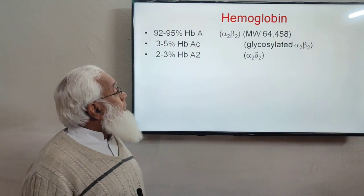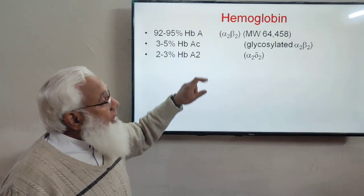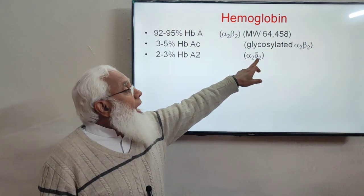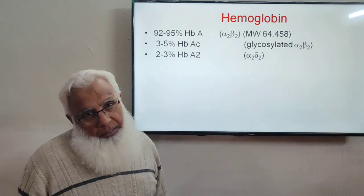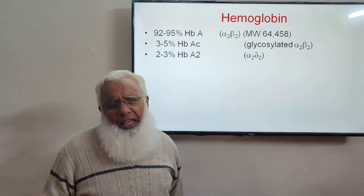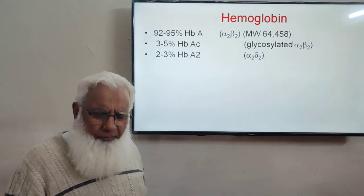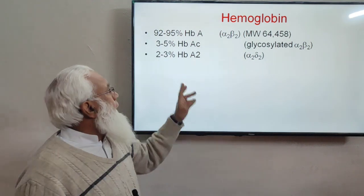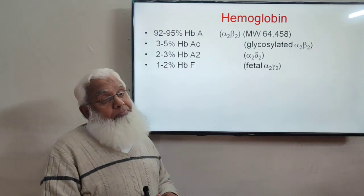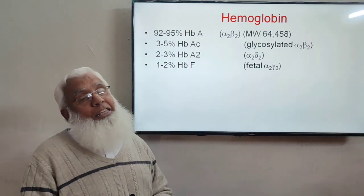Hemoglobin A2 contains two alpha chains and two delta chains instead of beta chains. The amino acid sequence of delta chains differs slightly from beta chains. It is present in small amounts in normal adult blood — about 2 percent. Some fetal hemoglobin also persists in adults.